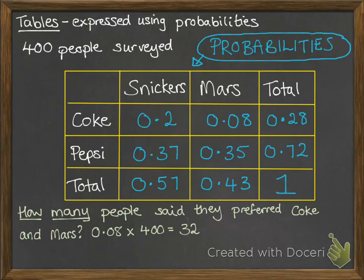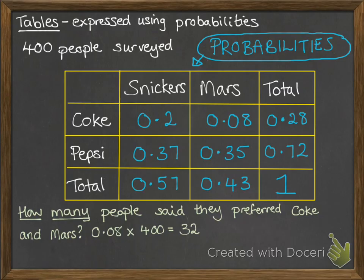You can do this for anything on that table. You might want to find the number of people that preferred Snickers overall, the number that preferred Snickers and Pepsi, or the probability that they preferred Pepsi and Mars. You could be asked all sorts of questions. You might also be given blanks to fill in, just like the previous video — it works in the same way. The only difference is it's being expressed as probabilities rather than actual numbers of people.